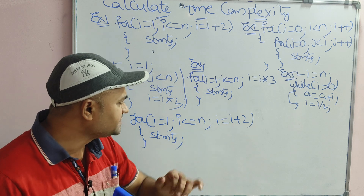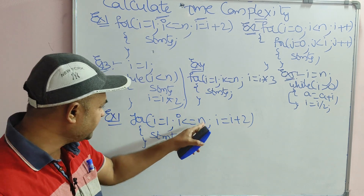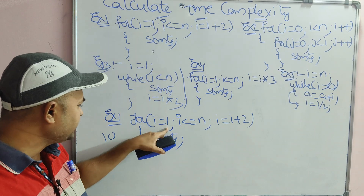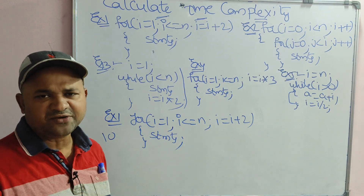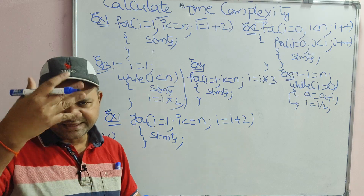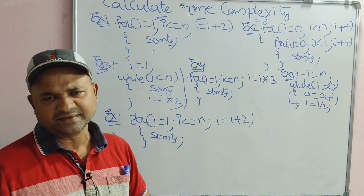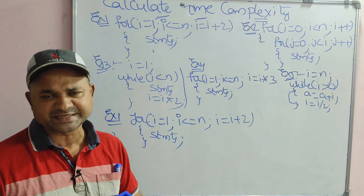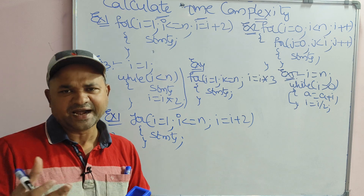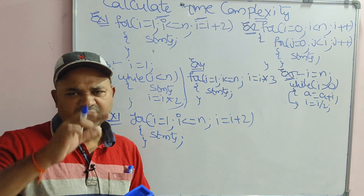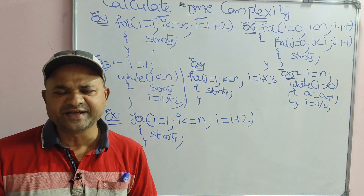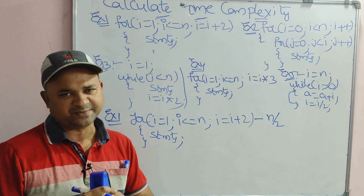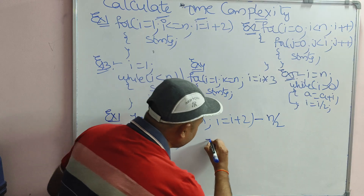But here we have i is equal to i plus 2. Let us assume that n value is 10. Initially i is 1, next i becomes 3, then 5, then 7, and so on. The number of odd numbers between 1 to n is n by 2. If n value is 100, then the number of odd numbers from 1 to 100 are 50, which is n by 2. So this for loop will be executed n by 2 times, and the body will also be executed n by 2 times.